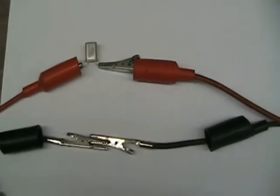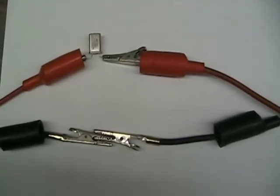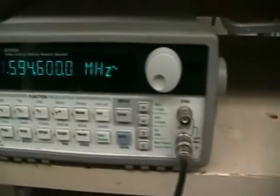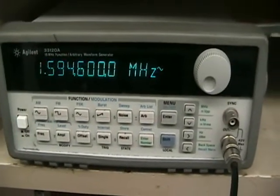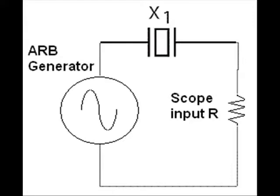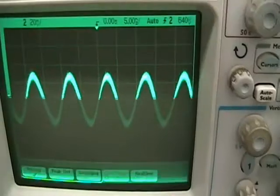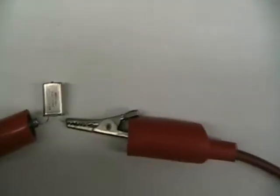Here's our circuit with the crystal. It's an extremely simple circuit. On one side we have a signal from the arbitrary waveform generator set up right now for 1.5946 megahertz, just a close value for our setup. The other side goes to the scope, so in this case the scope is our detector.